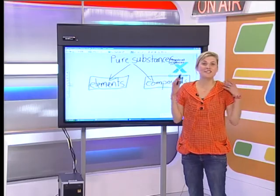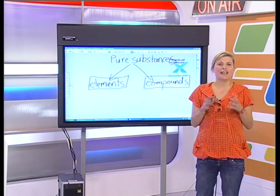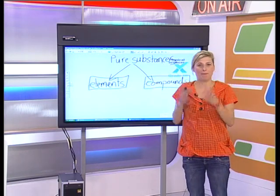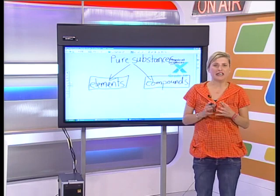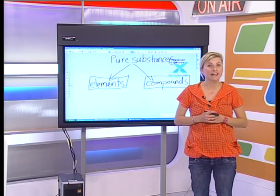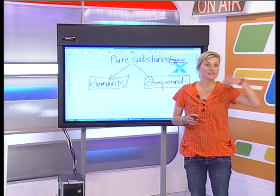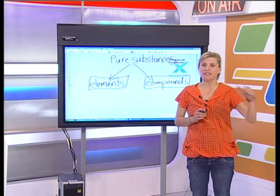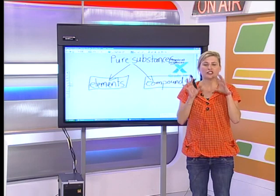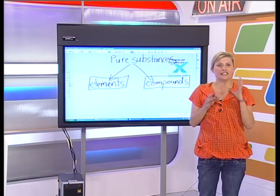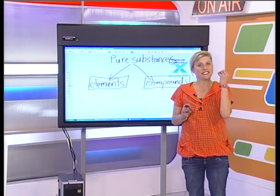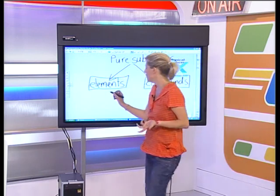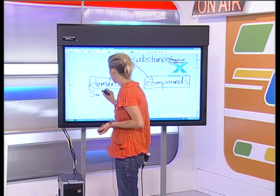An element cannot be broken up into smaller bits. Examples of elements would be all of those things we find on the periodic table — sulfur is an element, carbon is an element, and so forth. Elements cannot be broken up into anything smaller unless we go to the subatomic level.